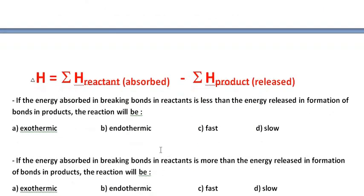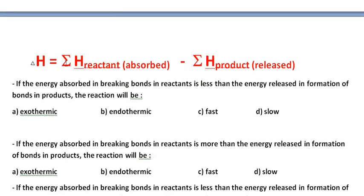If you want to calculate delta H for the whole reaction, we add the bond energy needed to break the bonds, then subtract the sum of the energy released during the formation of bonds.